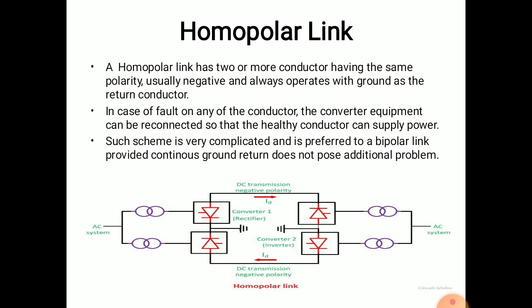In a homopolar link, if a fault occurs on any of the conductors, the converter equipment can be reconnected through the healthy conductor and can continue to supply power. Such a scheme is very reliable and is preferred over a bipolar link, provided that continuous ground return does not pose any additional problem. The homopolar link is used for supplying to a common monopolar cable transmission.